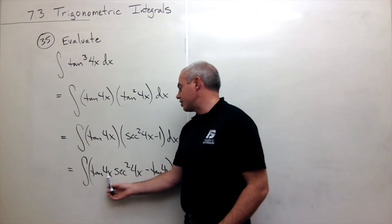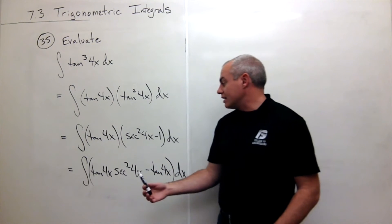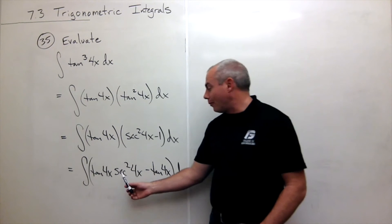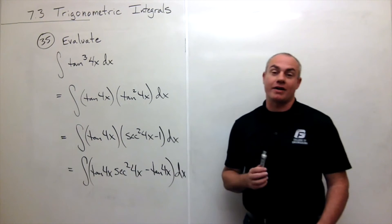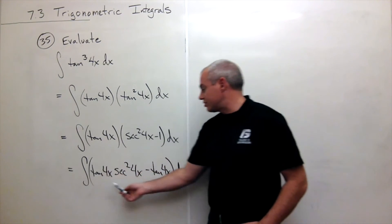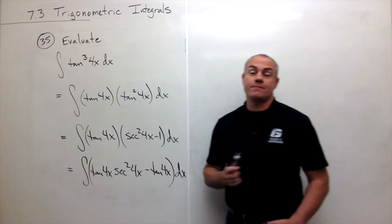The derivative of tangent of 4x is kind of, sort of, almost secant squared of 4x. Not exactly, but pretty close. So we could use a u-substitution to do the first piece.